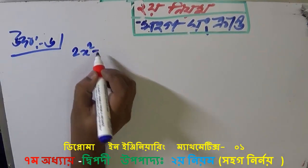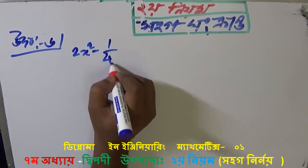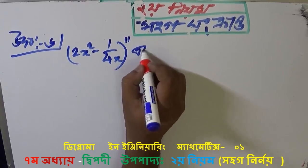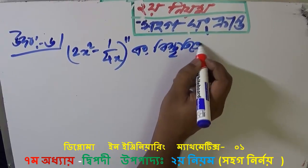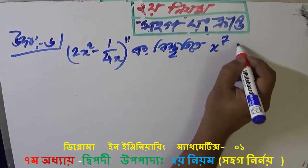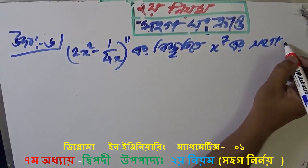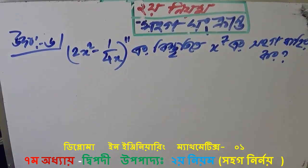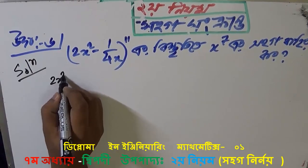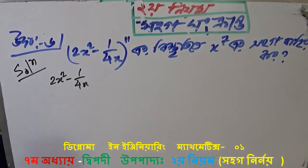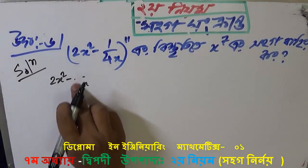2x squared minus 1 divided by 4x, all raised to the power of x — this expression involves x to a repeating power structure.